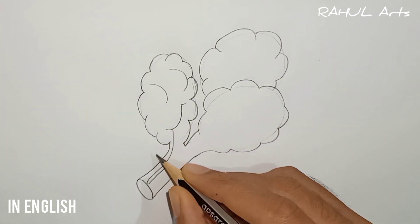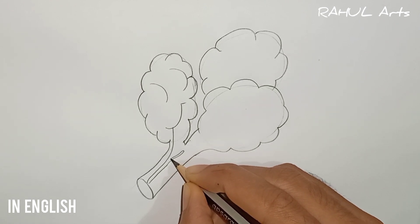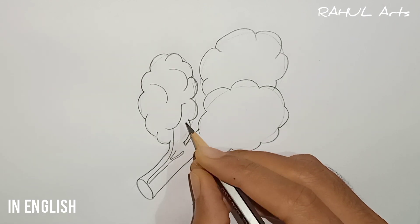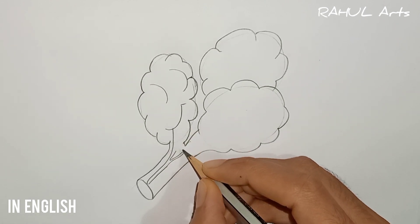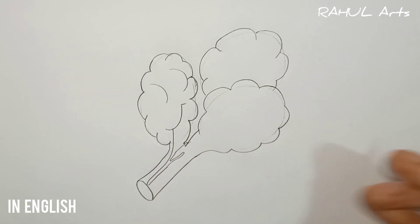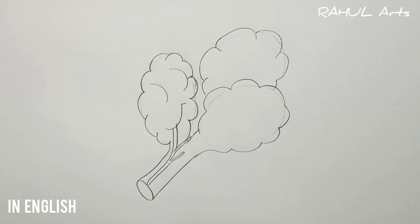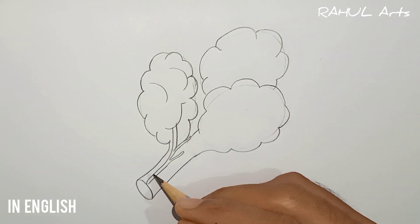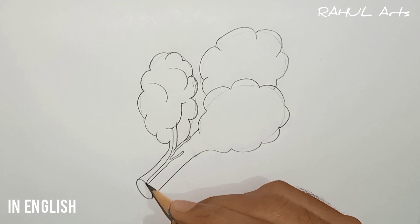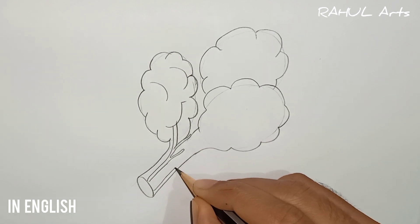Now after completing the alveolar sacs, draw a tube-like structure with three stems. The first two will be full, as you can see on the screen, and the last stem will be attached with the alveolar sacs. Now make another tube of similar structure.